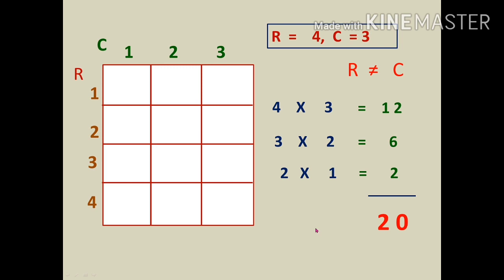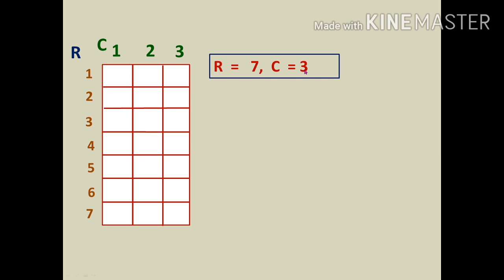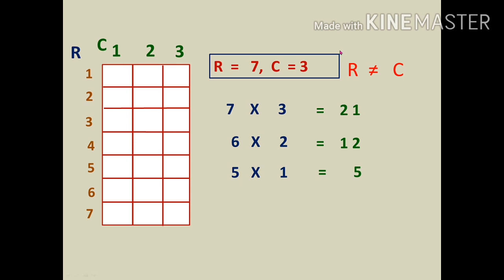Next image: counting rows gives 7, columns gives 3, so r = 7, c = 3, r ≠ c. Multiply step by step: 7×3, subtract 1 from each to get 6×2, subtract again to get 5×1. We got 1, so stop. Finding the values: 7×3 = 21, 6×2 = 12, 5×1 = 5. Adding gives 38. The total number of squares is 38.